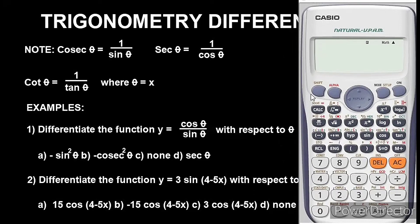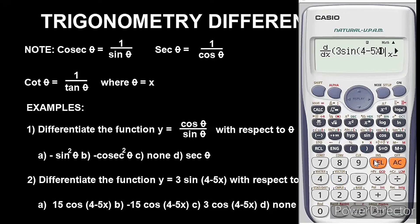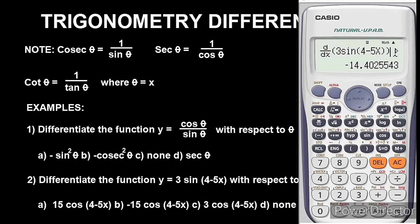Start by bringing out the differentiation symbol: press Shift then the integral button to get d/dx. Input the function: 3, sine, open bracket, 4, minus, 5, alpha x, close bracket. Make sure the brackets are balanced — on the right side you should have two closing brackets and on the left side two opening brackets. If they're not balanced you'll get an error. Enter 2 as the stored value and press equals — we get minus 14.40.